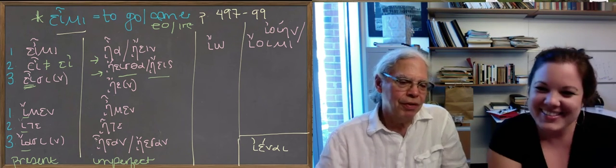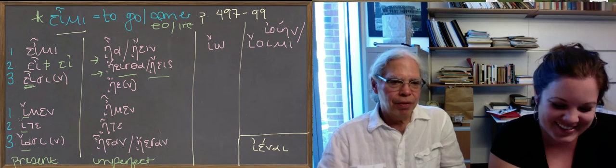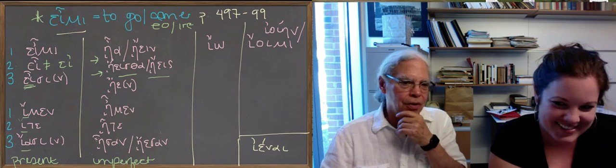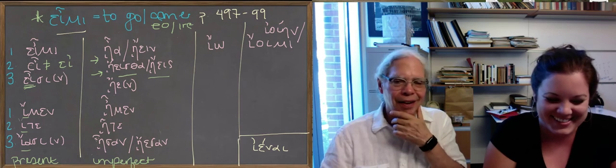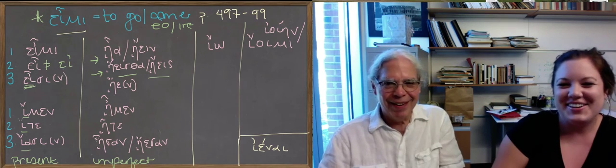And lastly, in the third person singular, you've got the augmented epsilon iota gives you the eta with an iota subscript, and then just the ending ε. Okay, we'll get there.